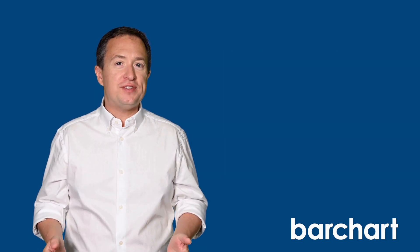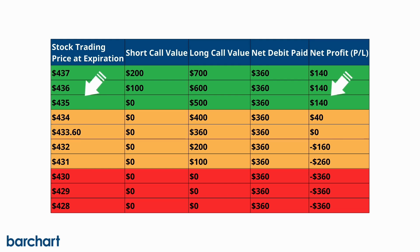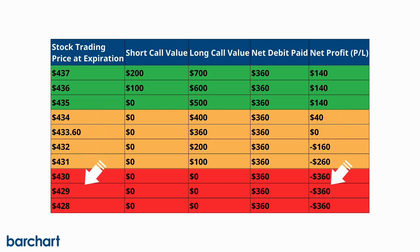As long as Microsoft's stock trades above the breakeven point of $433.60 at expiration, there will be some money left at the end of the trade. And if it goes above $435, no matter how high, that's okay too — you'll end up with a net profit of $140. Same on the downside: anything below the breakeven point results in a loss, to a maximum of $360 on this trade.